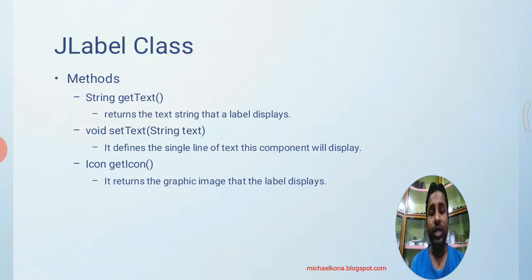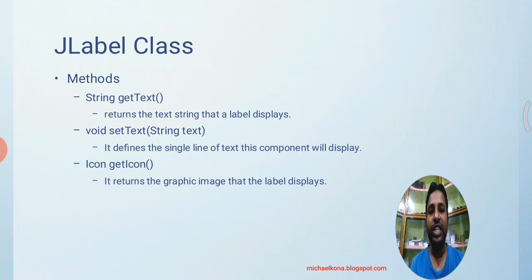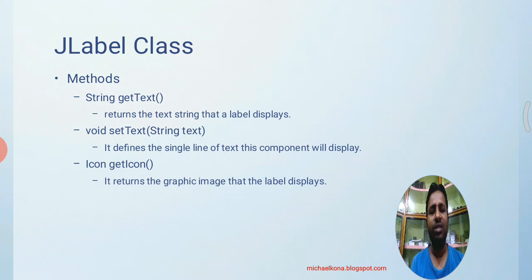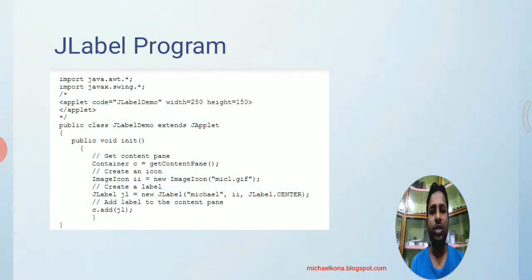There are many methods within the JLabel class. The important ones are: getText, which returns the string currently visible as the label text; setText, which changes the label text; and getIcon, which retrieves the icon. Many other methods are available to perform operations on the label.